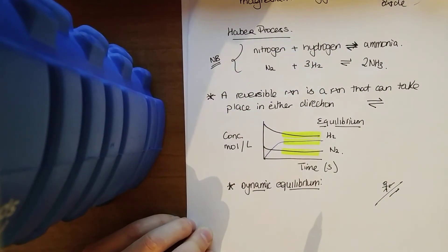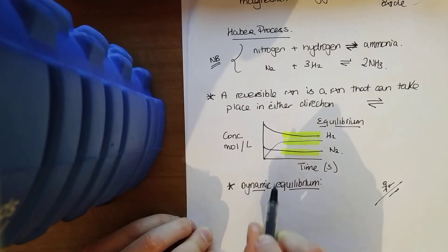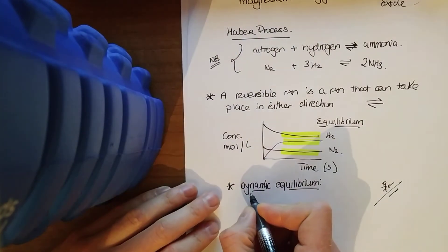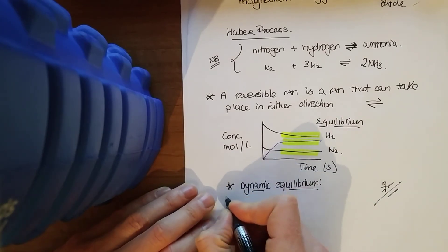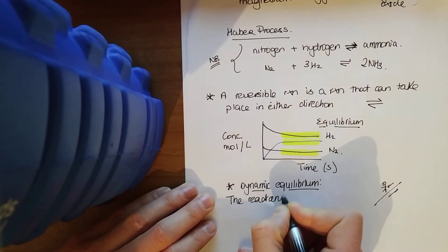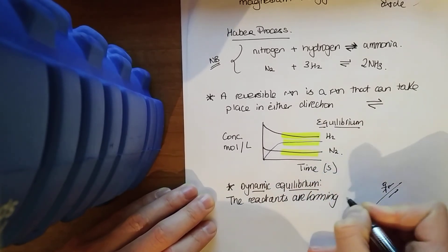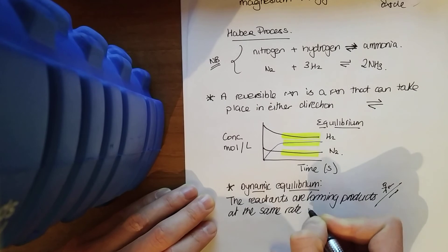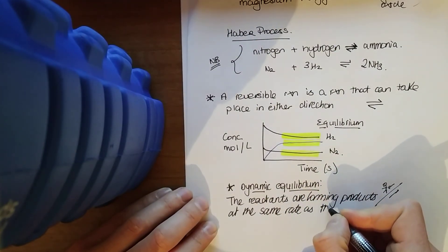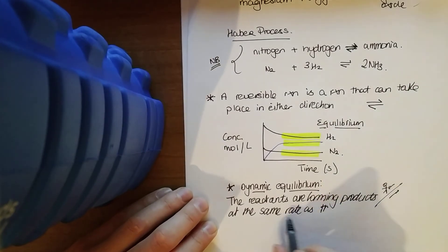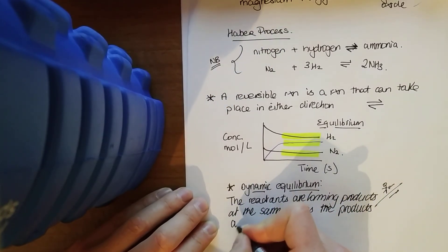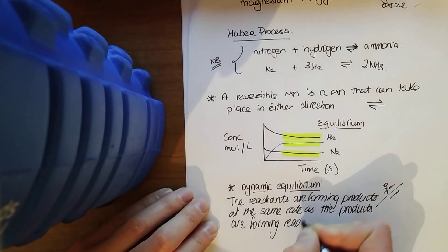So in terms of the reaction here, it looks like there's no reaction occurring, but there is reactions occurring, because the rate of the forward reaction equals the rate of the reverse reaction. Our reactants are forming products, and our products are forming reactants at the same rate. So dynamic equilibrium - the reactants are forming products at the same rate as the products are forming reactants. So there are reactions continually occurring.